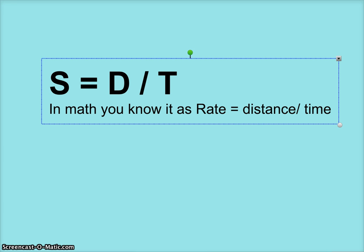We also have it as this formula: s equals d over t. In math, you might know it as rate equals distance over time. Because again, speed is the rate at which you travel a certain distance in a certain amount of time.